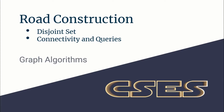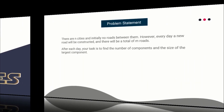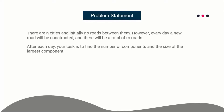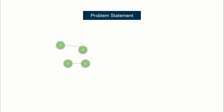Hello guys, this is Code and Code, and this is a video editorial for the problem 'Road Construction' taken from the CSES graph algorithm series. The problem statement says there are N cities and initially there is no road between them. Every day, day by day, you build a road between two cities, and you do this for M different days. After each day, your task is to find the number of components and the size of the largest component.